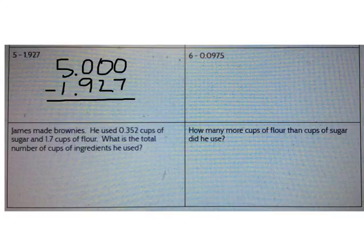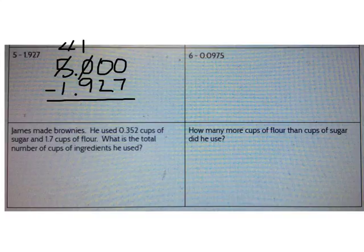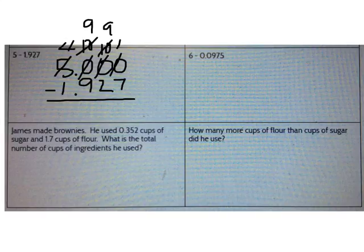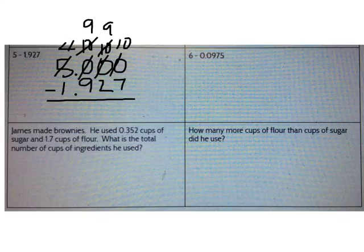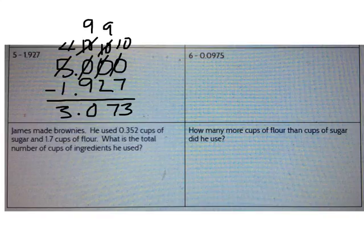I can't take 7 from 0, so I have to borrow all the way from the 5. 5 becomes a 4, then 10, 10 becomes a 9, 10, 10 becomes a 9, and 10. Now go ahead and subtract. What's 5 minus 1 and 927 thousandths? The correct answer is 3 and 73 thousandths.